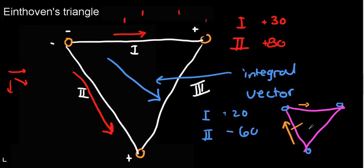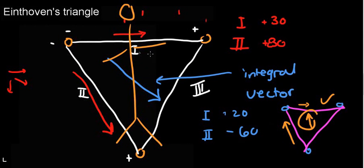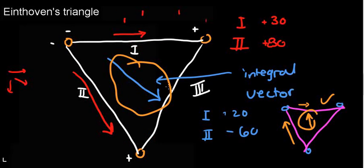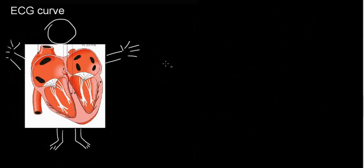In any situation where you're asked to draw these, as long as you understand that this is going to be slightly deflected to the left and slightly less in magnitude, drawing something like this will be acceptable. And you can imagine that I can take this Eindhoven's triangle and somehow place it on a person — in the middle I would maybe be able to draw the direction of the propagation of the electroconductivity of the heart.